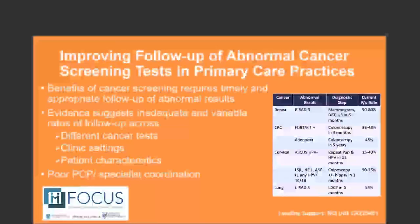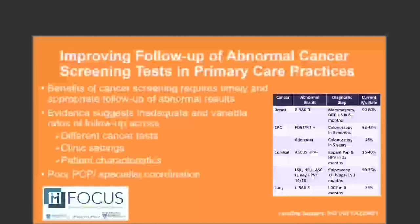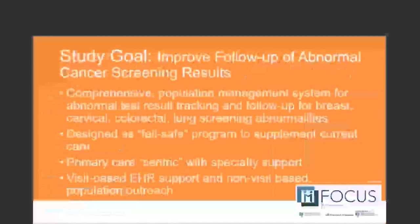The four arms are: first arm is standard care — we're going to be doing both qualitative and quantitative work to define what the standard of care is at the time we launch the study and then periodically across the period of enrollment. The second arm includes what we're calling visit-based reminders. The third arm includes visit-based reminders as well as a population health management component. And these are going to be rolled out sequentially. The fourth arm includes patient navigation, where we can also try to intervene on social barriers to care.